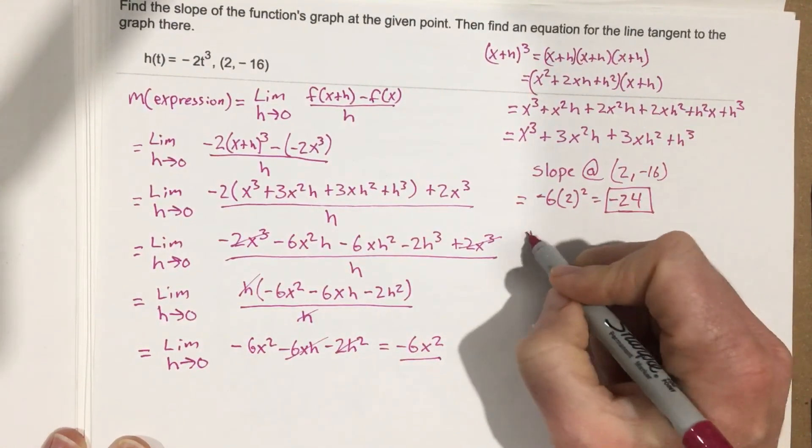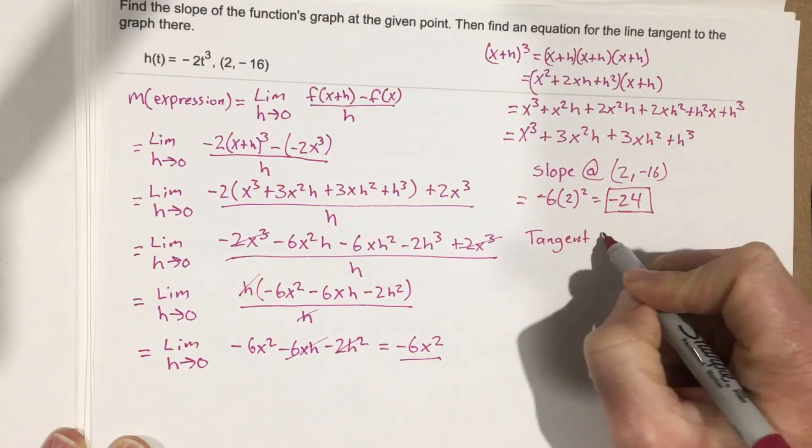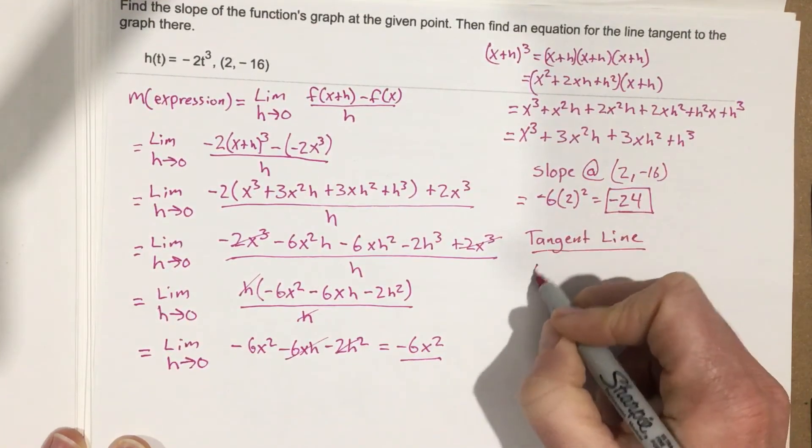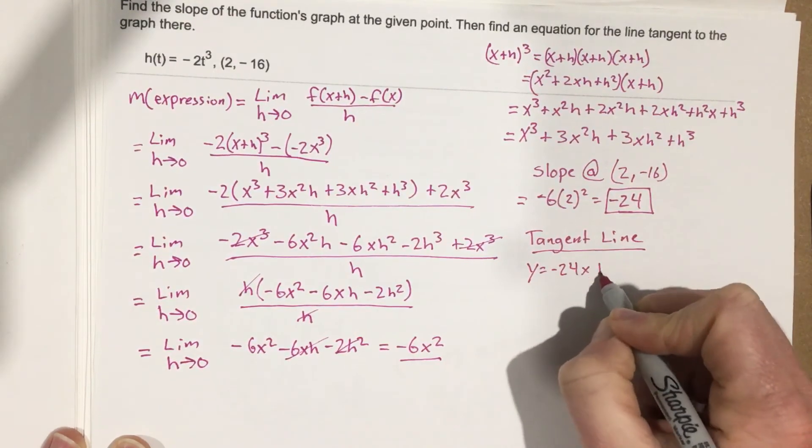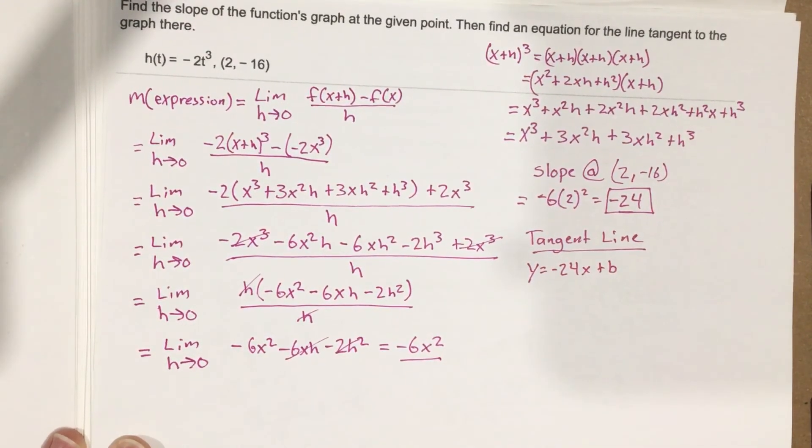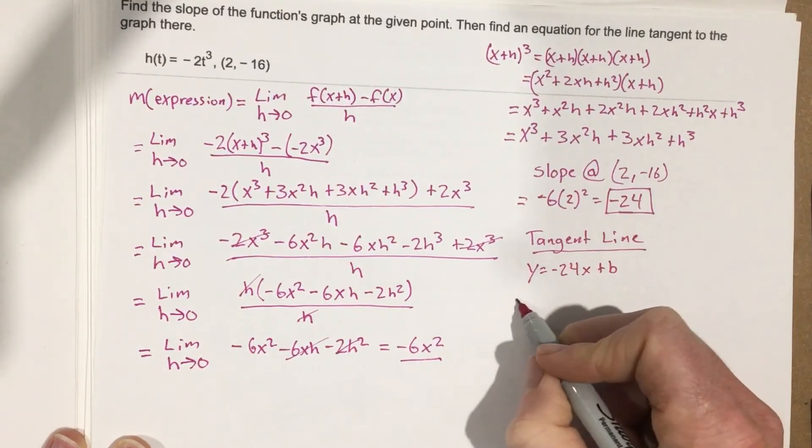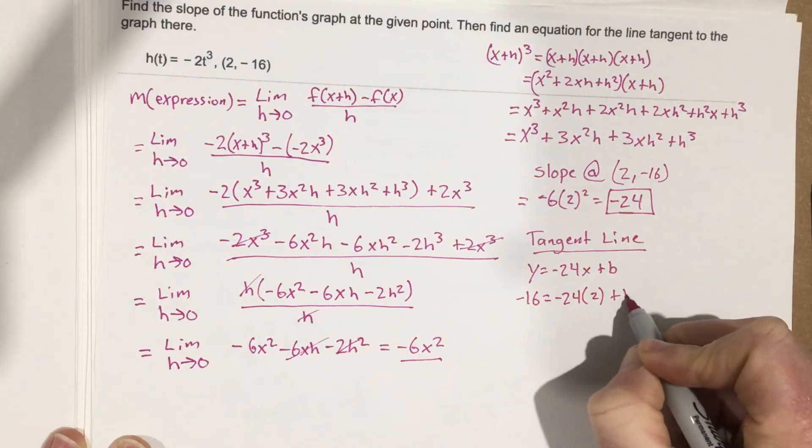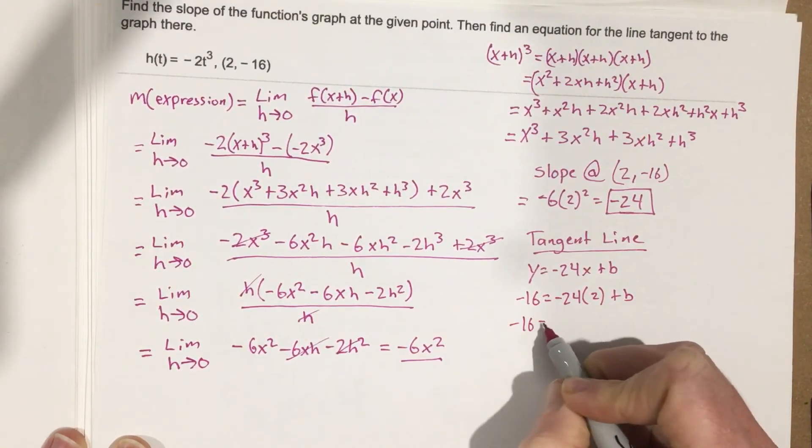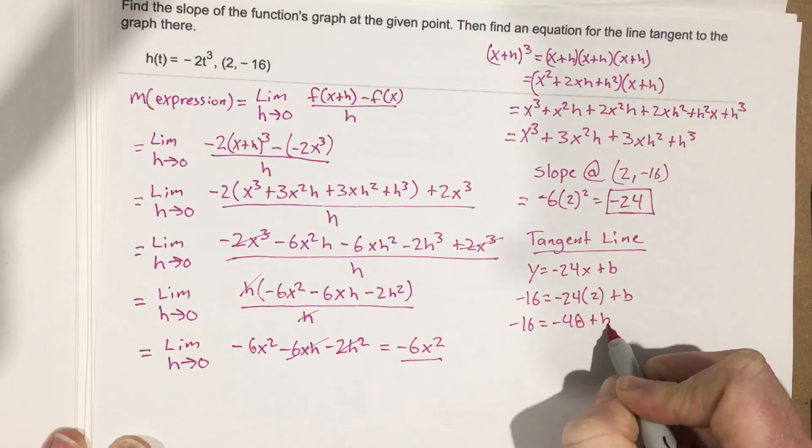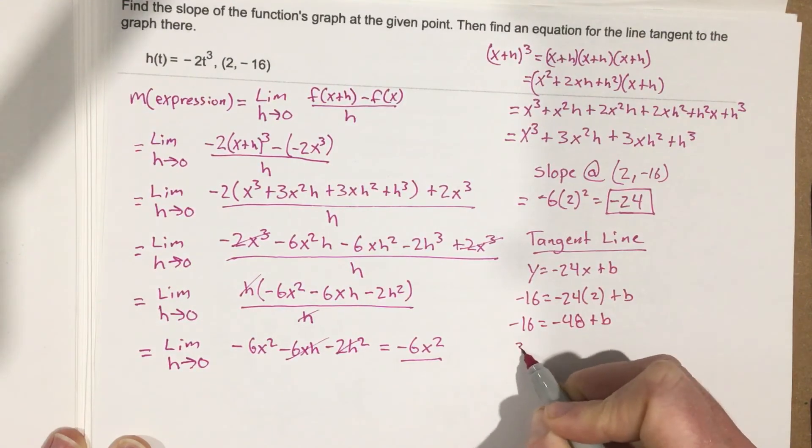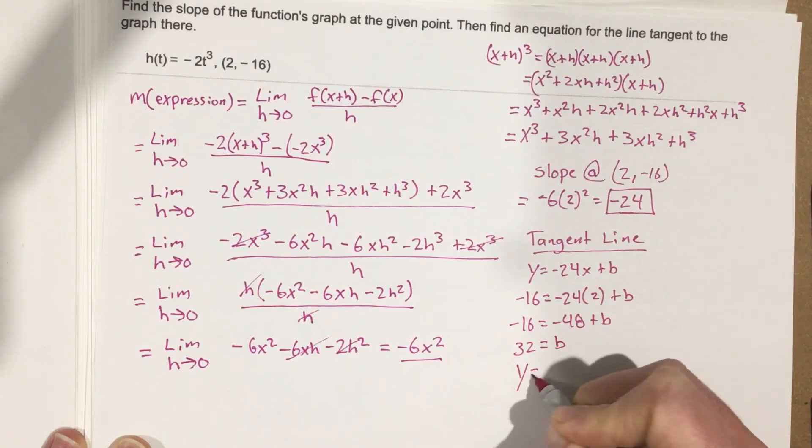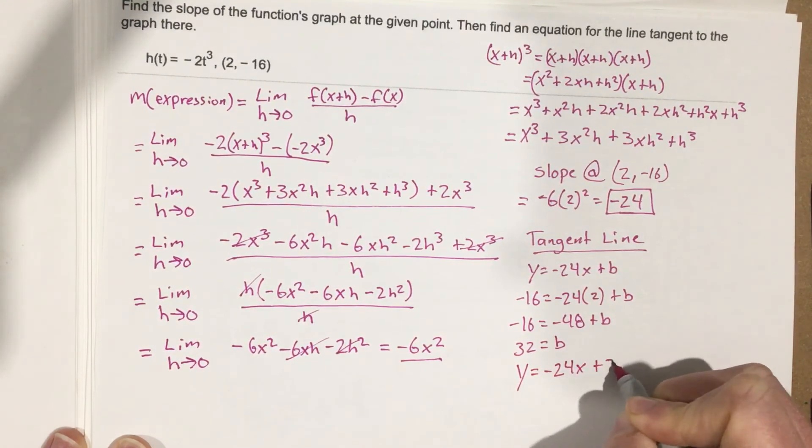Now I want to find the tangent line. So to find the tangent line, I take this and plug it into slope-intercept form. When I plug in 2 and negative 16, I get negative 16 equals negative 24 times 2 plus b. So negative 16 equals negative 48 plus b. When I add this over, I get 32 is b. So the equation is y equals negative 24x plus 32.